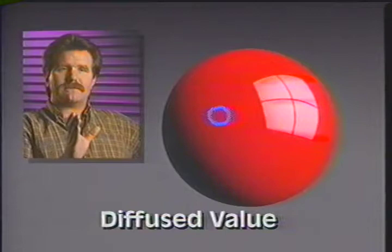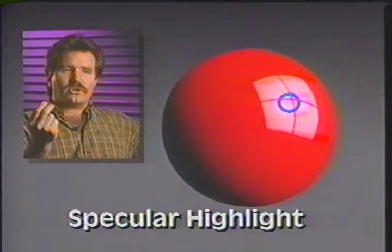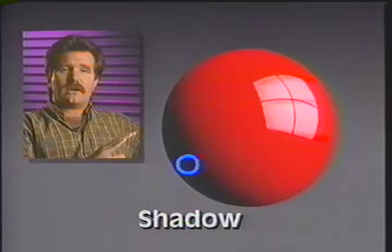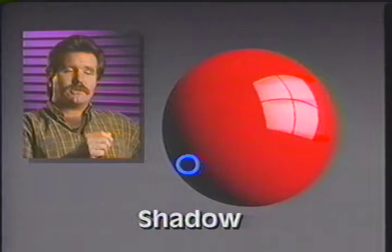Proactive control is the identification of three major categories of control. That is the diffused value, which is the true tonality of the object, keeping it consistent. The specular highlight, which is the shine or the moisture — the mirrored image of the direct source creating the diffused value, such as the sun or a strobe or even a panel. And then the control of the shadow, the area underexposed in the diffused, creating most shape and form on lighter objects.